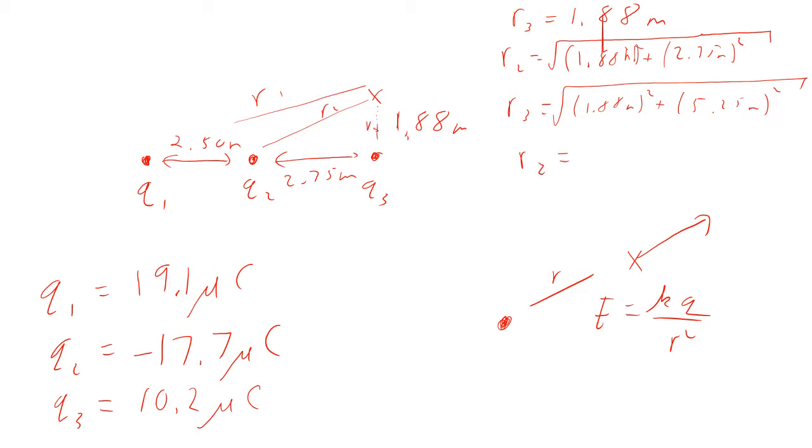So that means we do the math, then R2 is going to be equal to 3.33 meters, and R1 is going to be equal to 5.58 meters. So now we've got the distances so we can find the E's.